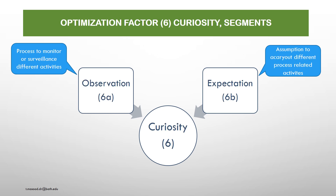The curiosity segment. The first is observation — a process to monitor or surveil different activities. The second is expectation — the assumption to carry out different process-related activities. These two are connected with curiosity: curiosity is constituted by observation and expectation to deliver the required result.